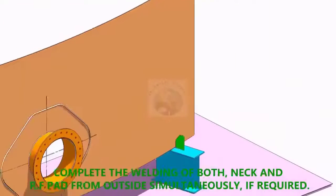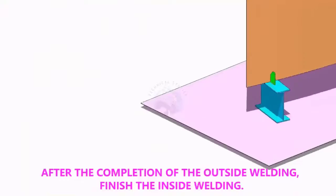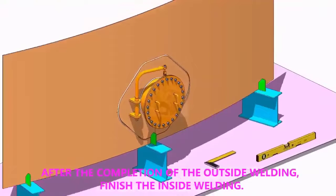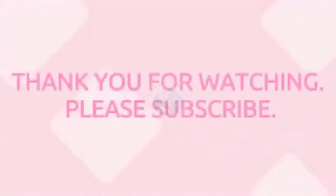After completing the welding from outside, back gouge the joint from inside and complete the welding. TAC weld on both sides.